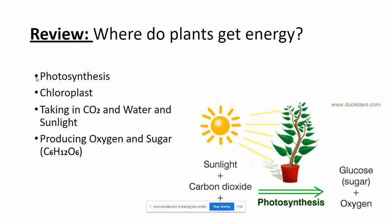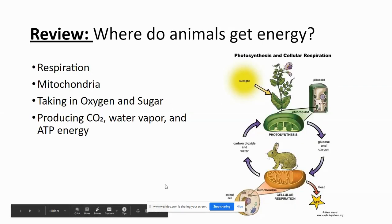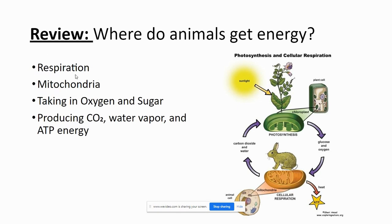Where do plants get their energy? They do photosynthesis in the organelle called the chloroplast, with the pigment called chlorophyll, turning everything green. Plants take in carbon dioxide, water, and sunlight, and produce oxygen and sugar — C6H12O6. Animals get their energy through respiration in the organelle called the mitochondria, in every cell. We take in oxygen and sugar and produce carbon dioxide, water vapor, and ATP energy.